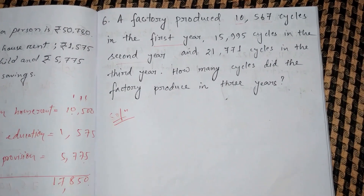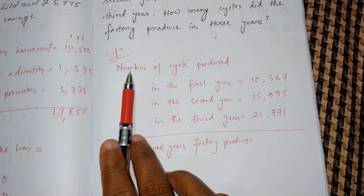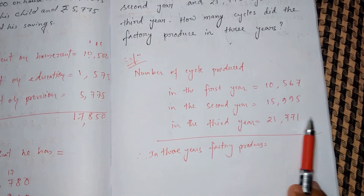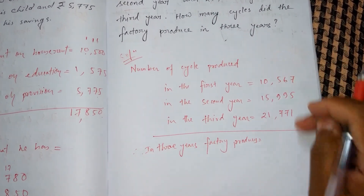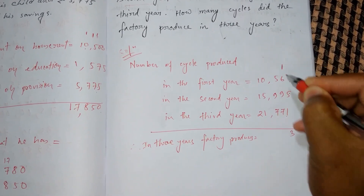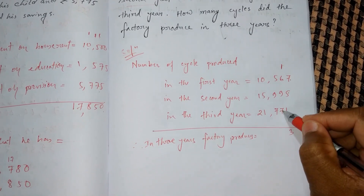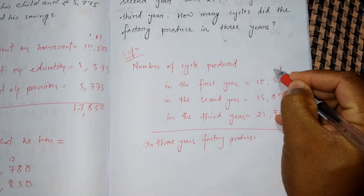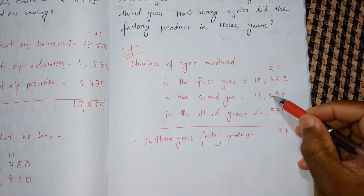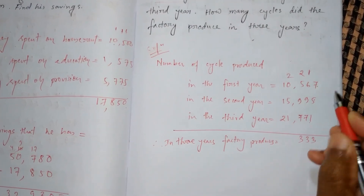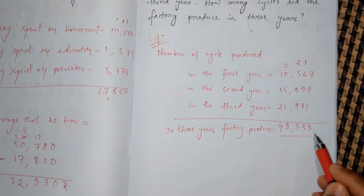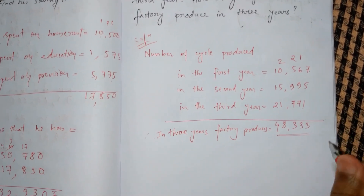For the solution I've written: number of cycles produced in the first year, second year, and third year from the question. To find the total, I add all three numbers. 5+1+6=12, carry 1; 9+1 is 10, 10+6=16, 16+7=23, carry 2; 5+2=7, 7+7=14, 14+9=23, carry 2; 5+2=7, +1=8; 1+1+2+2=4. So the total number of cycles the factory produces in three years is this result.